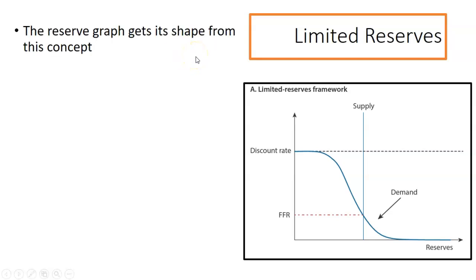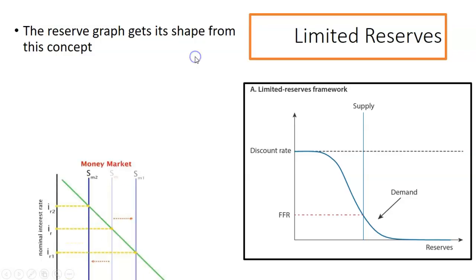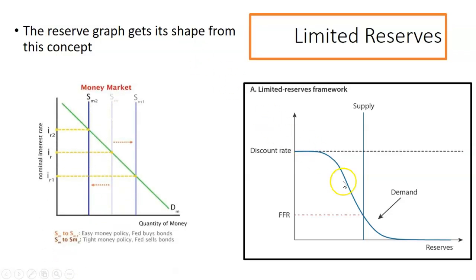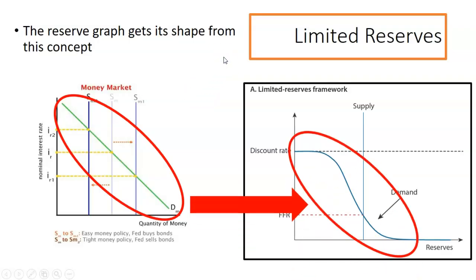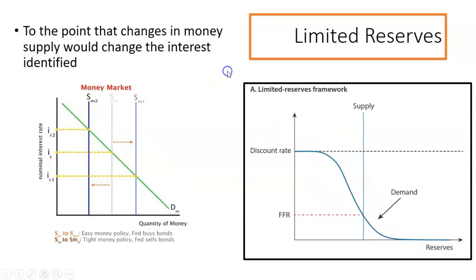So the reserve graph — the way I can remember it — the limited reserve portion is this downward sloping demand curve. We can think of it like the money market graph, which has a downward sloping demand, and changing the supply of money really changes the interest rates associated with that. The limited reserve section, this downward portion, is also downward sloping. This means that changing the supply of money really has a large impact on the interest rates.